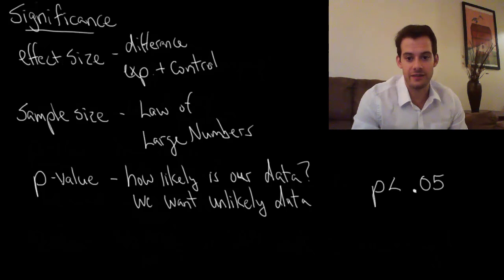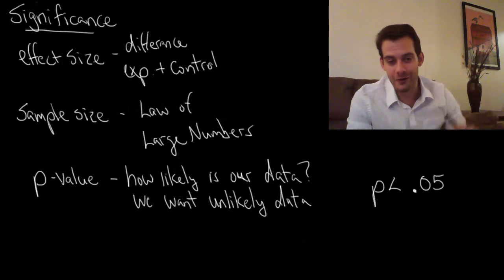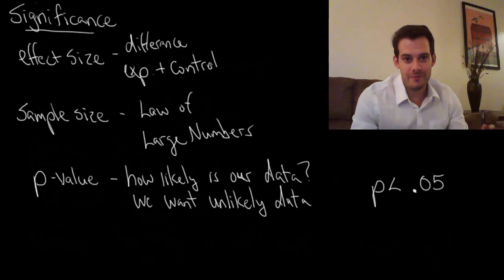So we'll never be able to say the p-value is zero. It could be .0000 you know hundreds of digits long but it's never going to get to zero because there's always a chance that that data could happen on its own.